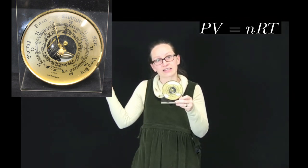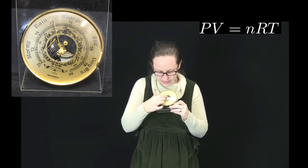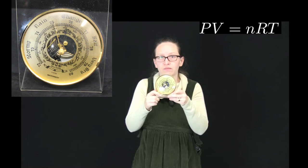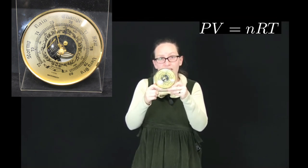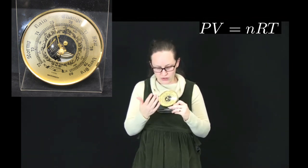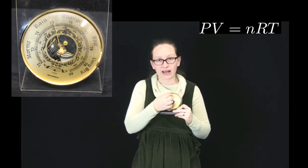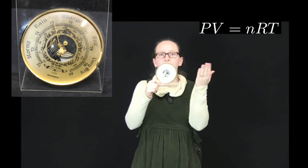That was traditionally how barometers were made, and they were very good at predicting the weather. But more recently barometers have been made slightly differently. What I have here is another example of a barometer. This barometer has a little silver container back here. Inside that container is a vacuum. As the pressure changes, because of the ideal gas law that we saw in the hot air balloon topic, PV equals NRT, the volume of this metal container actually changes a little as well. As the volume changes, it pushes against a spring which has gears that connect it to this needle here. This needle tells us what the pressure is.